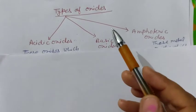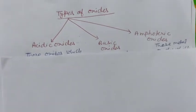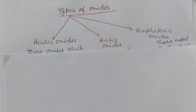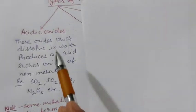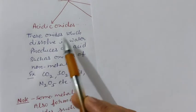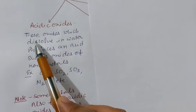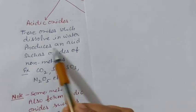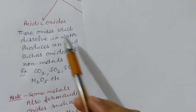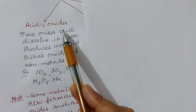First of all, we will discuss about acidic oxides. What are acidic oxides? Those oxides which dissolve in water produce an acid. Those are called acidic oxides.